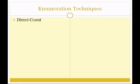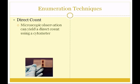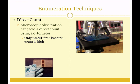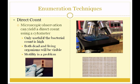There are a number of ways to enumerate bacteria in a sample. The first is the direct count — a microscopic observation of a sample using a special slide called a cytometer. This is only useful if the bacterial count is high; if there are very few organisms, we won't be able to see them. Both dead and living organisms are visible, which will influence the count. Motile organisms present a problem because if they're swimming around, a count becomes very difficult to achieve.